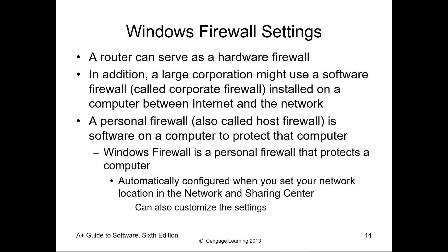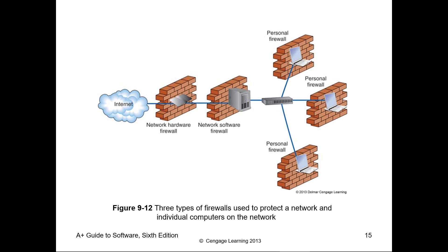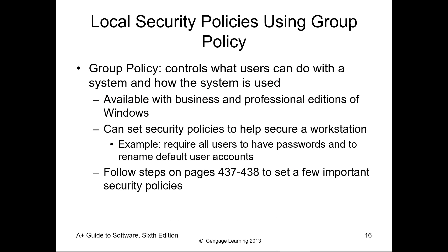Windows Firewalls. A firewall — probably a software one here — is used to filter traffic so you can block things that come in or go out based on whatever criteria you want. There are three types: a network hardware firewall, a network software firewall, and a personal firewall, which is normally software-based. Software firewalls can run on different devices on the network. Moving on, security policies are normally done at a server level, but you can create local security policies for things you want all accounts to adhere to. These are normally only available on business or professional editions of Windows.